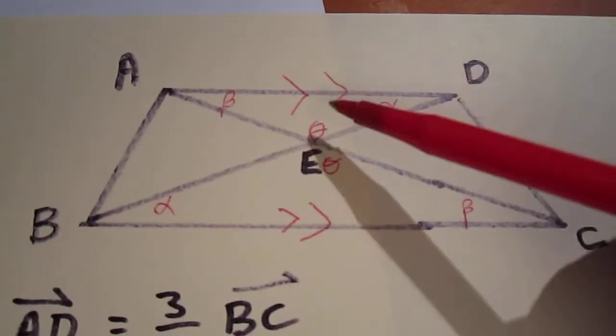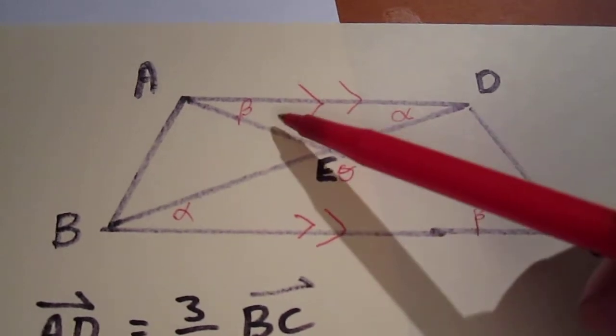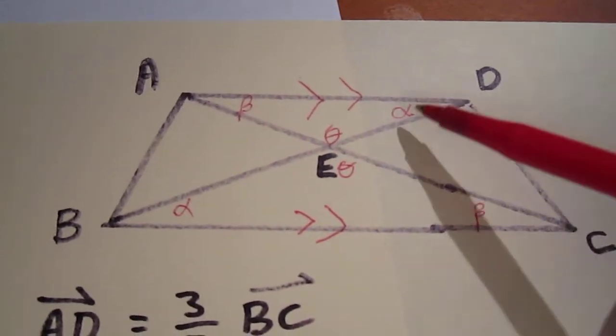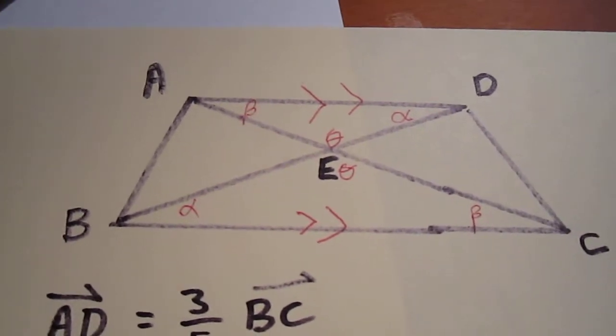And since this side and this side are in the ratio of 3 to 5, then this side and this side are also in that ratio and this side and this side are also in that ratio. That's good to know.